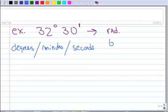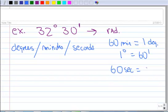We also know that we have 60 minutes in one—60 minutes equals 1 degree. So 1 degree equals 60 minutes. And then also we know that 60 seconds gives us 1 minute. So 1 minute is equivalent to 60 seconds.